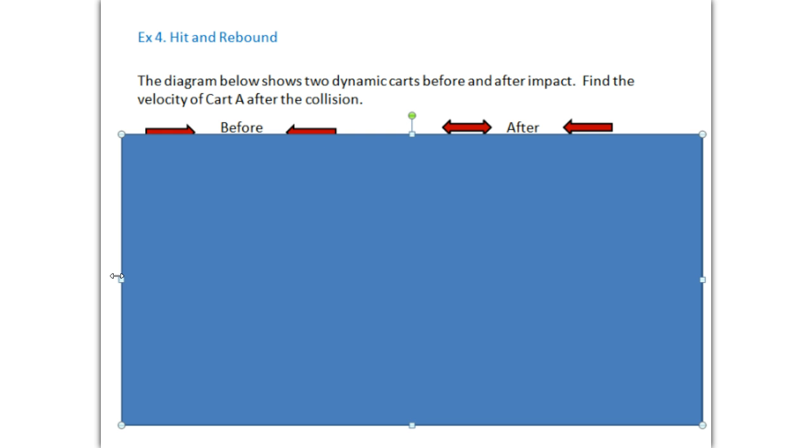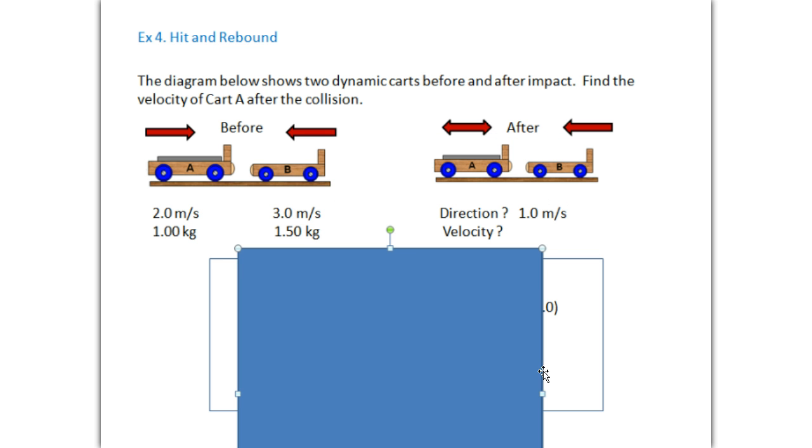Now, so the carts, let me just slide over here. So here's before the collision. Two carts are coming towards each other. This cart is moving at two meters per second to the right and weighs one kilogram. Cart B moves at three meters per second and has a mass of one and a half kilograms. They'll hit and bounce away from each other. Cart B is still moving at one meters per second and continuing to the left. But cart A, we don't know which direction it's going in after the rebound, and we don't know its velocity.